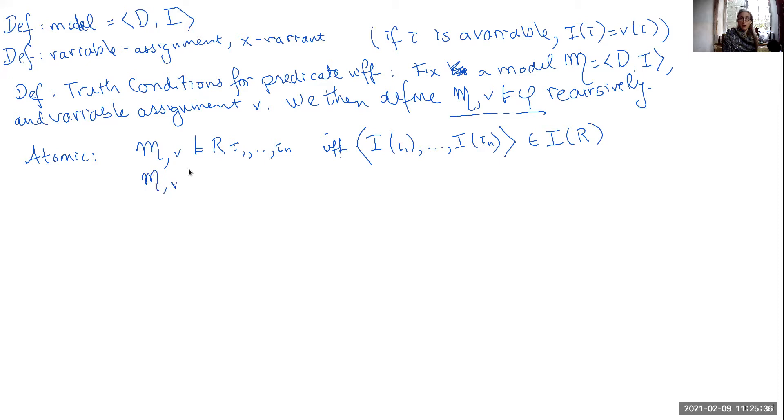The other type of atomic sentence that we have is identity statements. Things of the form tau 1 equals tau 2, and these are going to be true if what these terms are interpreted for in the domain is, in fact, the same thing. Here's where it's important to remember that if our term is a variable, then the interpretation just is whatever the variable assignment assigns to it.